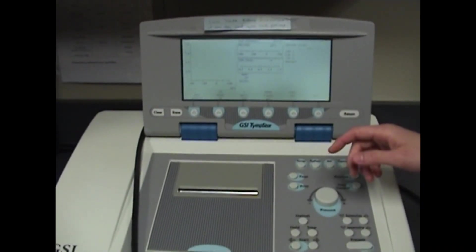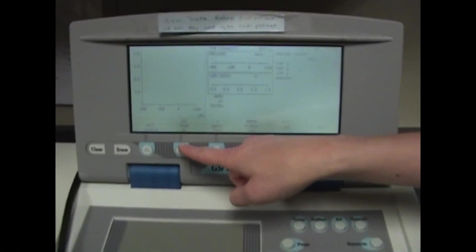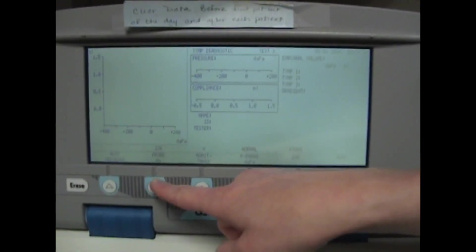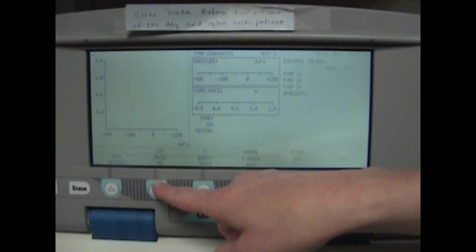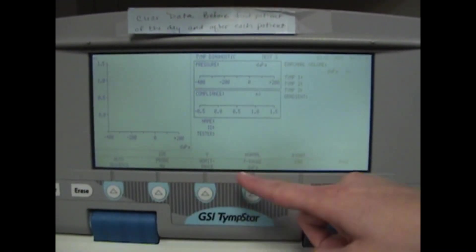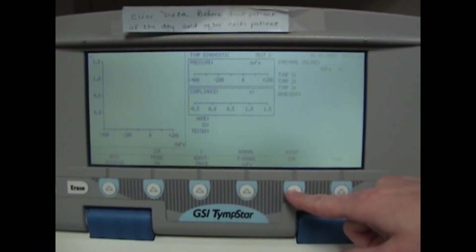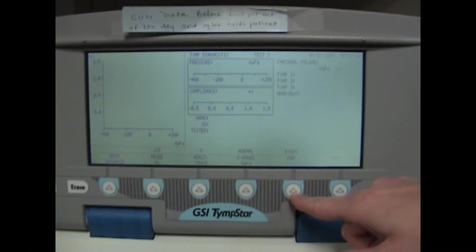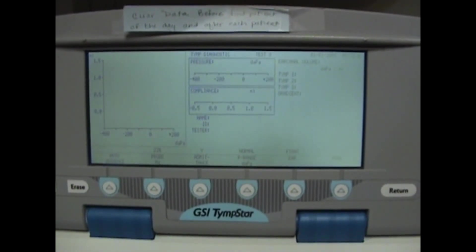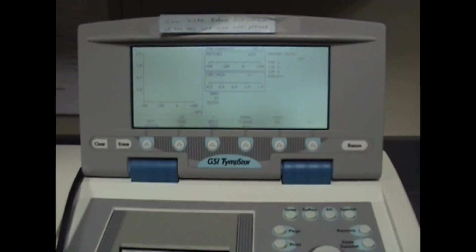Now that we have our patient all set up, we're here at the tympanometer and we're going to make some selections. First, you want to make sure your frequency is correct for the probe tone—it should say 226 Hertz. Then make sure you have the correct ear selected. This blue button changes between right and left ear.